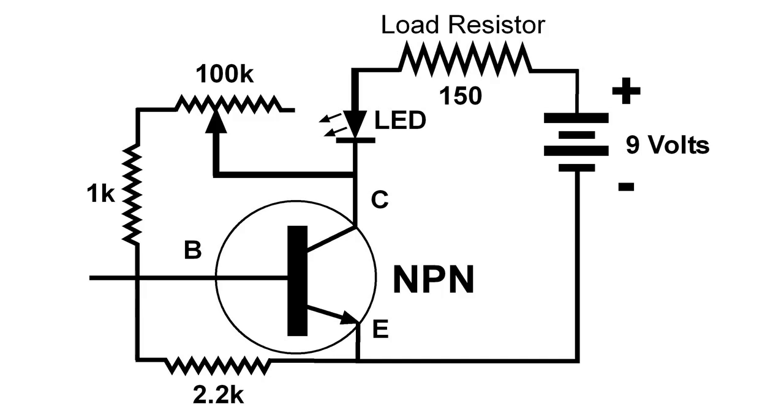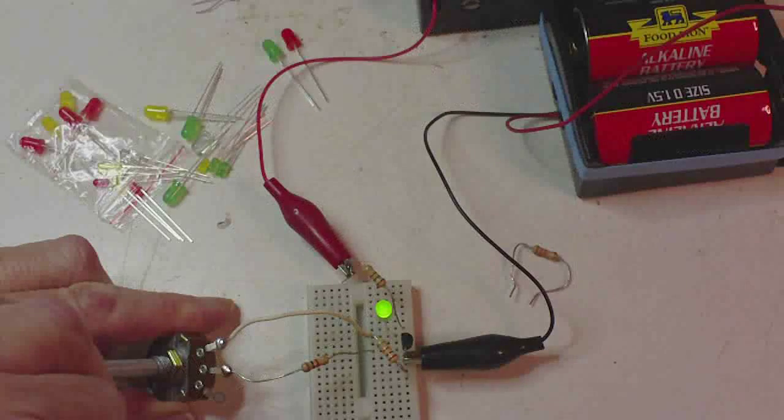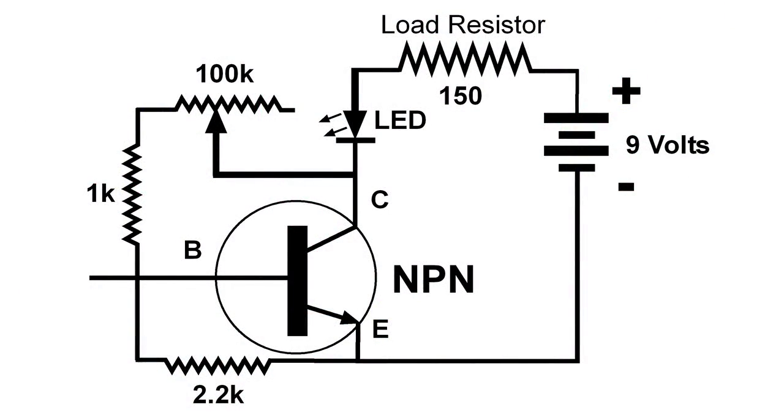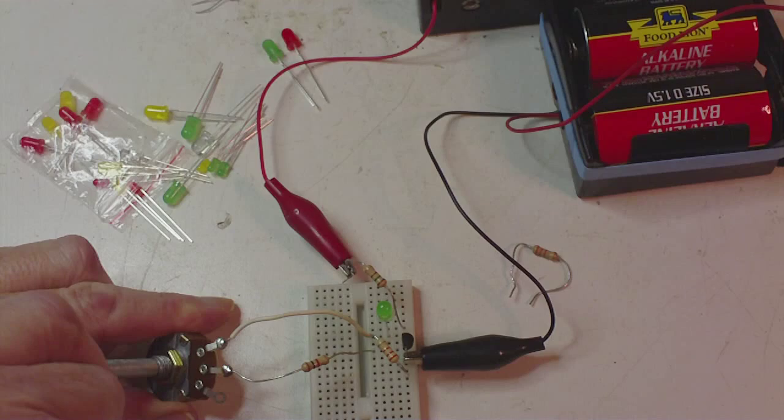And of course, when I move it in the other direction, increasing the resistance, the LED becomes dimmer, and when the resistance is high enough, the LED goes out altogether.